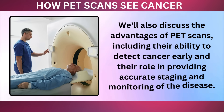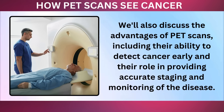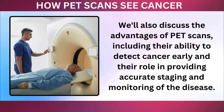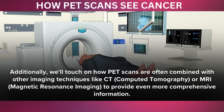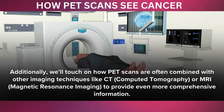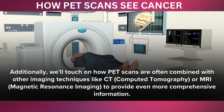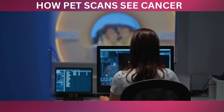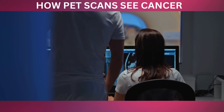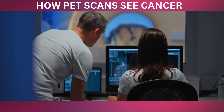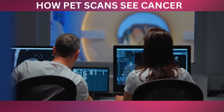We'll also discuss the advantages of PET scans, including their ability to detect cancer early, and their role in providing accurate staging and monitoring of the disease. Additionally, we'll touch on how PET scans are often combined with other imaging techniques like CT, computed tomography, or MRI, magnetic resonance imaging, to provide even more comprehensive information. This combination lets doctors see exactly where metabolic activity happens in the body, improving the accuracy of diagnosis and treatment planning.